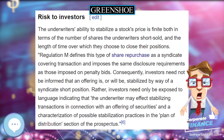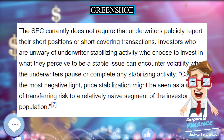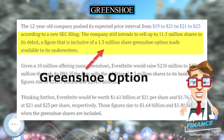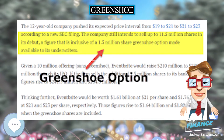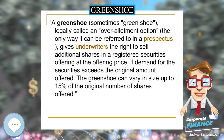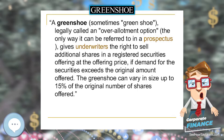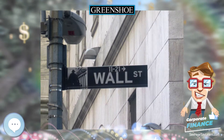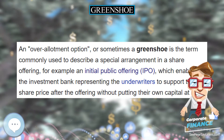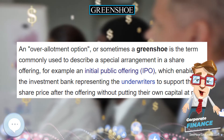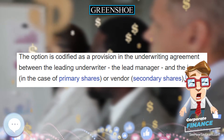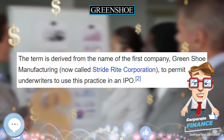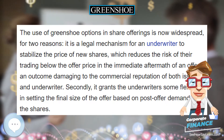Secondly, it grants underwriters some flexibility in setting the final size of the offer based on post-offer demand for the shares. As an example of how the green shoe option provides stability and liquidity: a company intends to sell 1 million shares of its stock in a public offering through an investment banking firm or group of firms known as the syndicate, which the company has chosen to be the offering's underwriters.